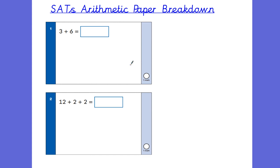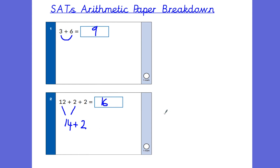So 3 plus 6: you're going to count on from 6 and count on 3 — that's the easiest way. So 6, 7, 8, 9. For 12 add 2 add 2, I would say add the first 2 first — 12, count on 2, gives 13, 14. Then add the next 2, giving 15, 16. It's just about the children being able to count forwards and backwards.